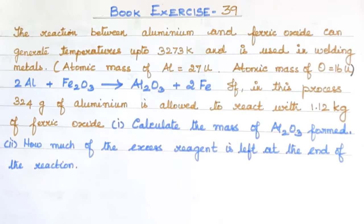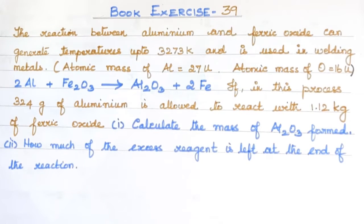In this process, 324 grams of aluminium is allowed to react with 1.12 kg of ferric oxide. These are our reactants. Aluminium is 324 grams and Fe2O3 is 1.12 kg.